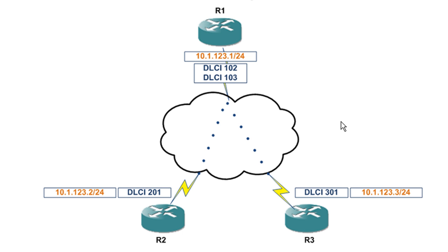The split horizon rule doesn't come into effect yet because we're not actually routing — this is a physical connection. These guys are all on the same subnet, so we're not going to have to route anything. These are basically just directly connected routes. I'm going to keep this diagram up while I bring up the CLI.